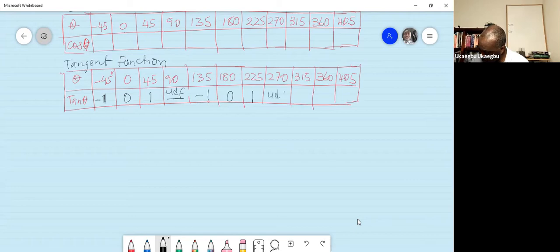UDF again. And 315? Negative one. And 360? Zero. 360 is zero. How about 405? One.